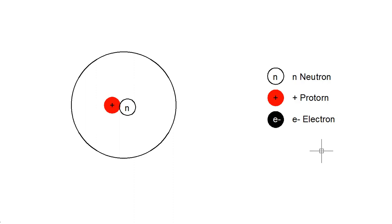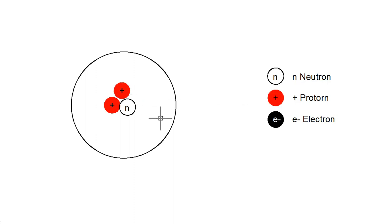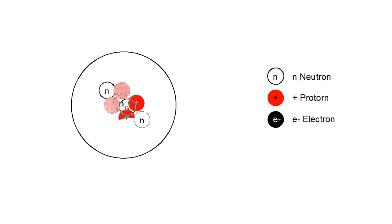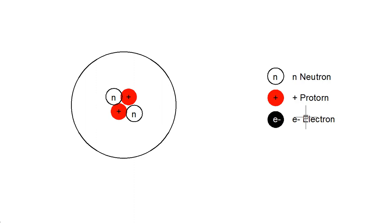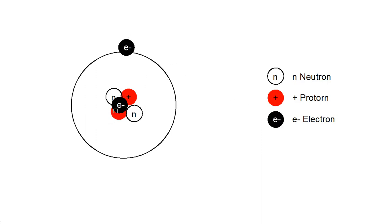I can advance to the next element by adding a proton — now I've got helium, some isotope of helium. Let me balance it out with a couple of neutrons and put an electron in the first shell. The first shell can hold two electrons max, and with two it's nicely balanced. So here is a helium atom that is nicely balanced out.